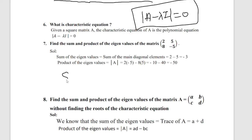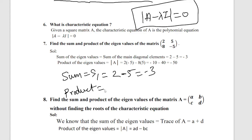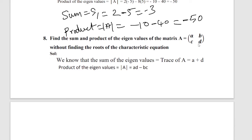Sum and product of eigenvalues: the sum of eigenvalues is S1 — add the diagonal numbers; for example 2 + (minus 5) = minus 3. The product of eigenvalues is the determinant of A. The determinant cross-multiply gives minus 10 + 8×5 = 40, opposite sign minus 14, so total minus 50.